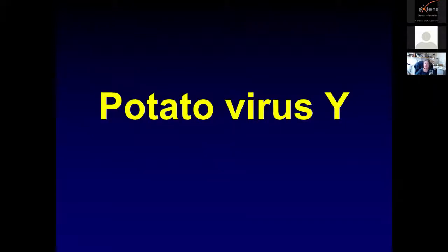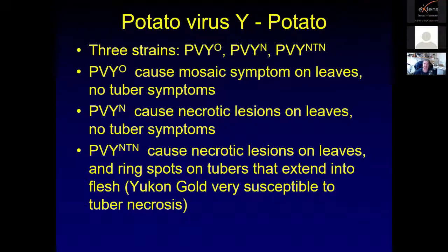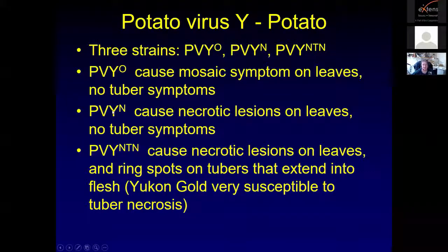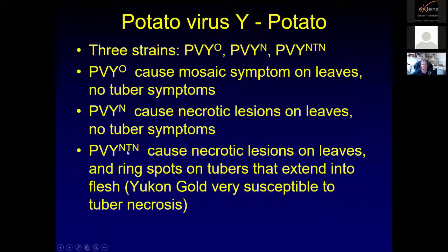Potato virus Y is not seen very often in Utah, but when it does occur it can be fairly devastating. There are three strains: PVY-O, PVY-N, and PVY-NTN. PVY-O causes only mosaic symptoms on the leaves — a red, light green, and dark green mottling — but no symptoms on tubers. PVY-N causes necrotic brown spots on the leaves but also no tuber symptoms. PVY-NTN causes necrotic lesions on leaves and also ring spots on the tubers that extend into the flesh. Yukon Gold is one variety that's very susceptible to that tuber necrosis. Commercial growers could not sell potatoes showing those rings.